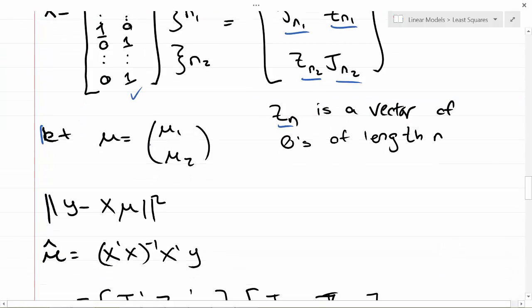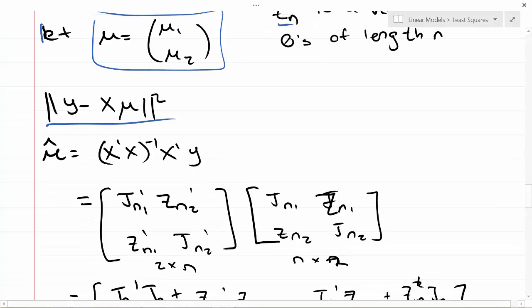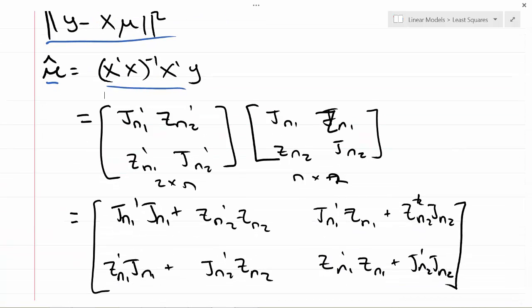I could write this as J_n1, Z_n1, Z_n2, J_n2, where Z_n is a vector of zeros of length n. Let's let mu, instead of writing beta, let's call it mu equal to mu_1, mu_2, and we want to now minimize the squared norm between y and x mu. Well, mu-hat by our least squares result is (x transpose x)^(-1) x transpose y.